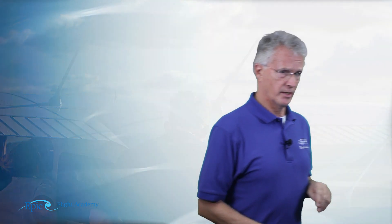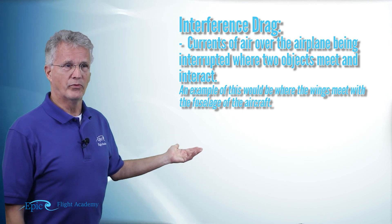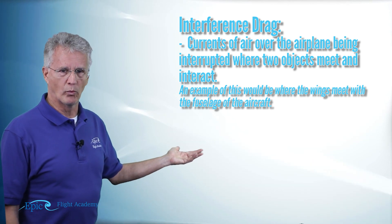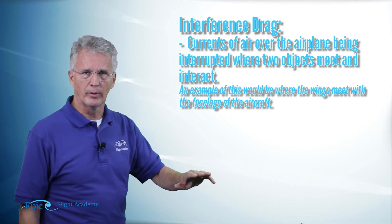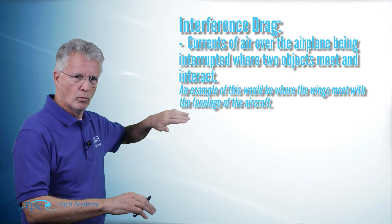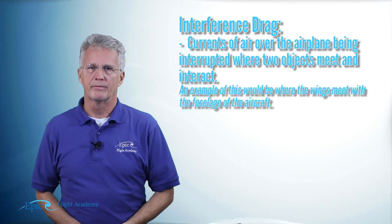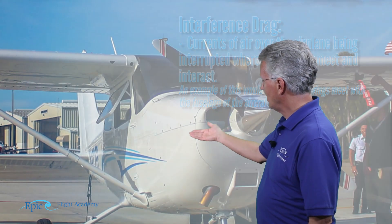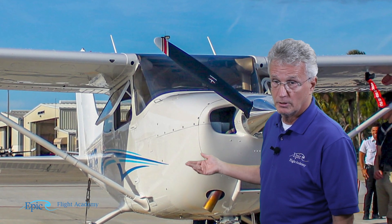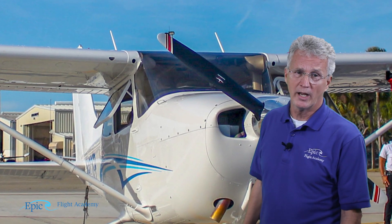The second type is interference drag. Interference drag is when currents of air flowing over the airplane are interrupted where two parts of the aircraft meet. A good example of that is where the wing root meets the fuselage. Where those meet, they interrupt that airflow, and that causes drag — that's called interference drag.